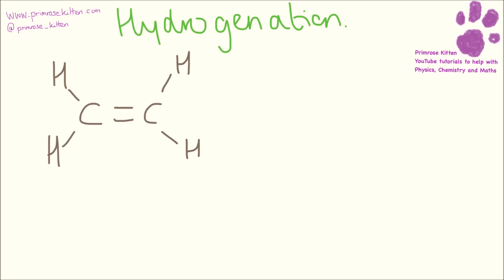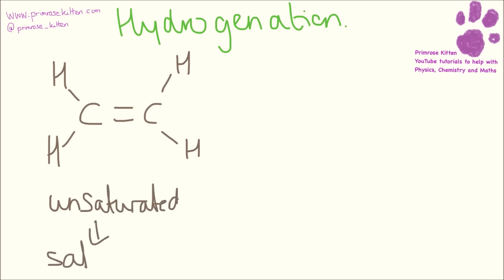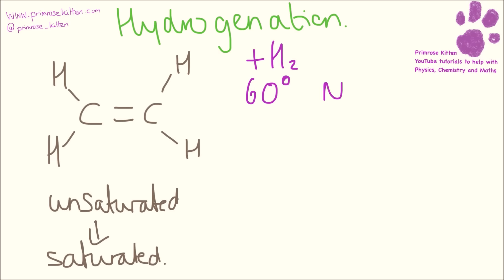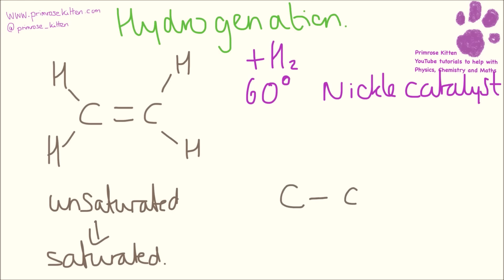If we want to harden an oil — if we want to go from something that is unsaturated, so it has double bonds, to something that is saturated with only single bonds — what we need to do is to add in hydrogen gas. It needs to be done at 60 degrees and you need a nickel catalyst. What will happen is the double bond will break and the hydrogen will just pop in there, hardening or hydrogenating the double bond.